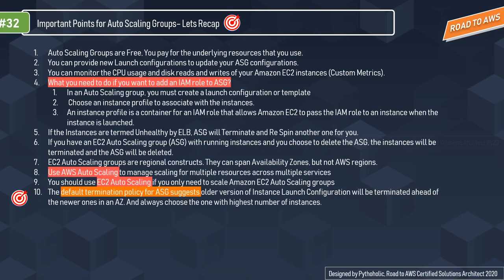If you want to add an IAM role to an auto scaling group, you must create a launch configuration or template and then choose an instance profile to associate with the instances. An instance profile is a container for an IAM role that passes role information to an EC2 instance when it starts. For example, if your EC2 instance needs to talk to S3, you assign an S3 IAM role to it.